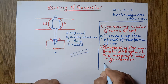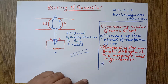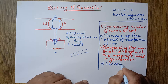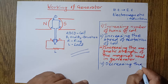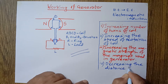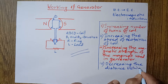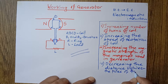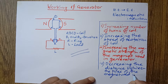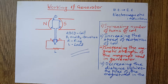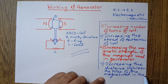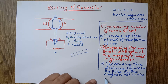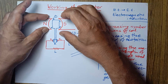Now the fourth method is decreasing the distance between the poles of the magnet used in the generator. What does this mean? If the distance between the poles is decreased, then the distance between the coil and the poles also decreases.